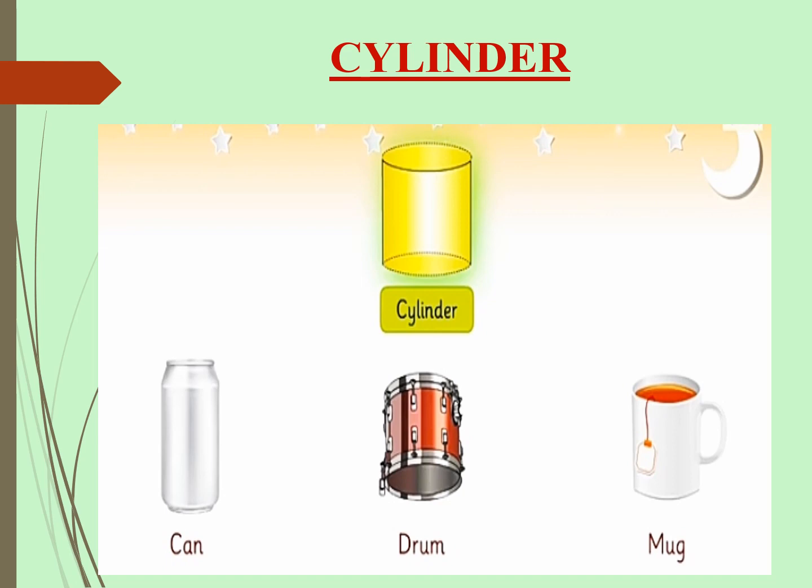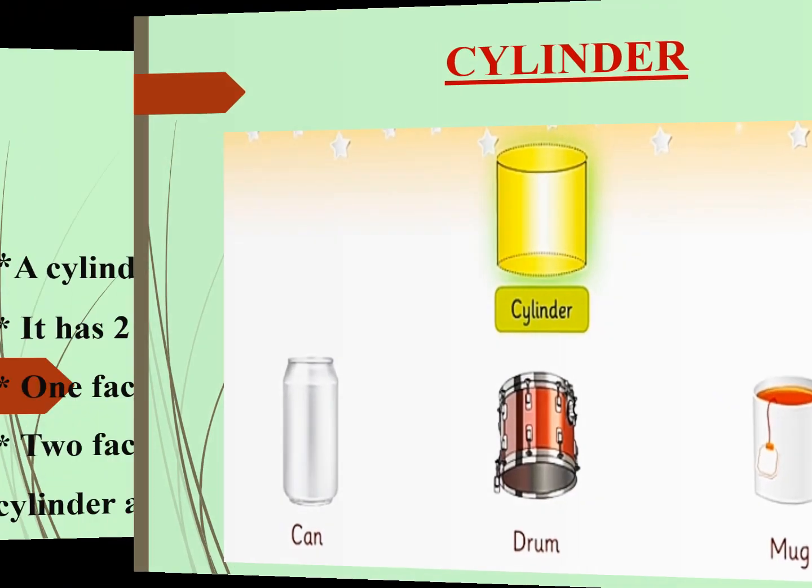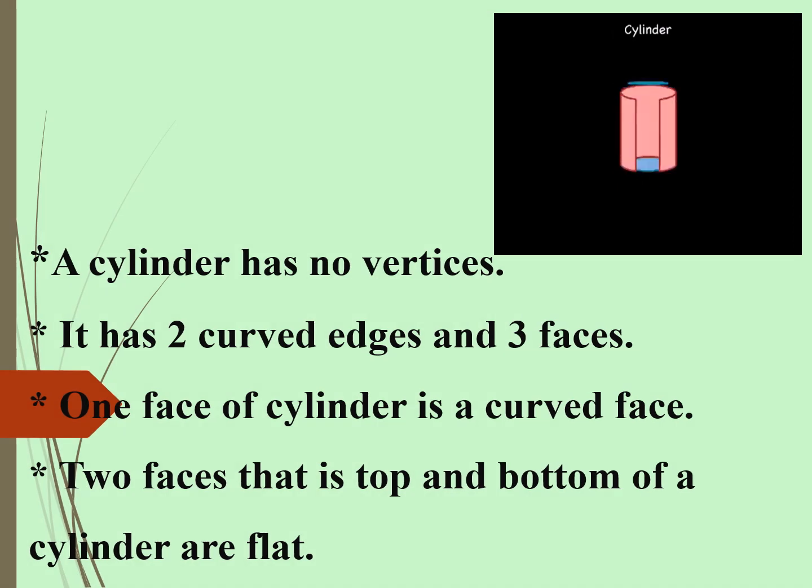Cylinder. These are examples of cylinder: can, drum, mug. A cylinder has no vertices. It has 2 curved edges and 3 faces. One face of cylinder is a curved face. Two faces, that is top and bottom of a cylinder, are flat.